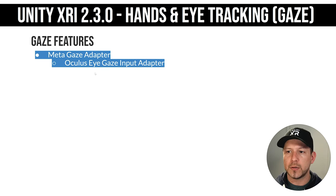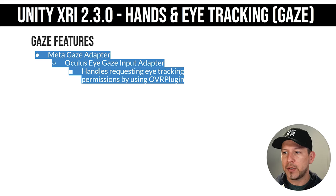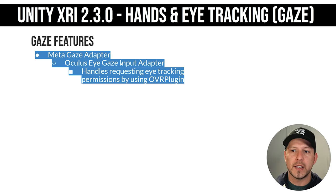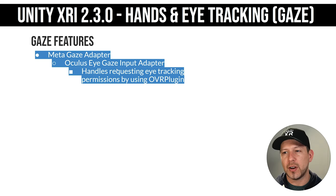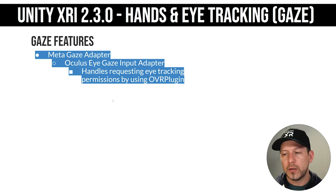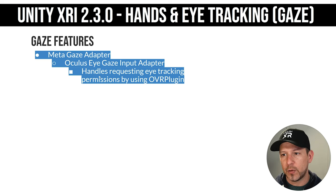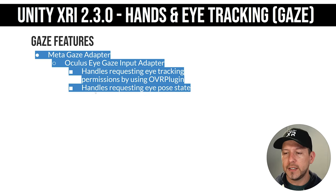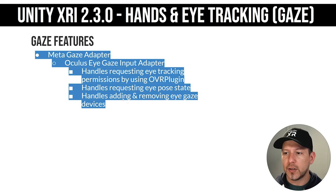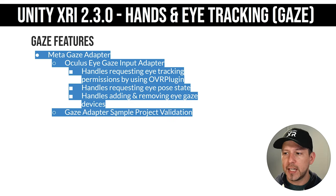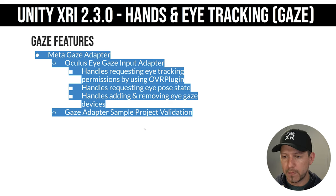The meta gaze adapter comes with the Oculus Eye Gaze Input Adapter, which handles requesting eye tracking permissions through the OVR plugin. Unfortunately this requires the Oculus Integration because Meta didn't use OpenXR as an interface — they created their own version of OpenXR. Once they implement OpenXR as an open standard you won't need this adapter, but for now you have to use the Oculus components and Oculus Integration. This also handles requesting eye pose state and adding and removing eye gaze devices.